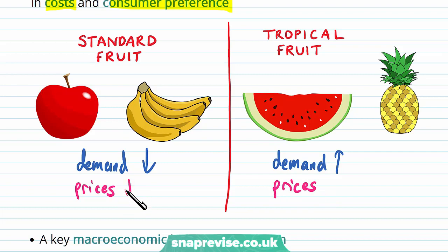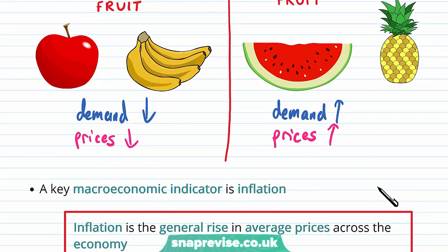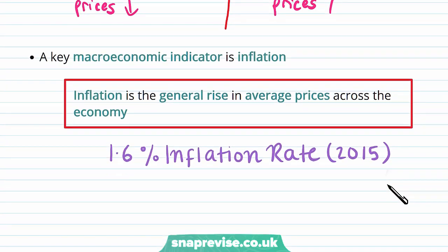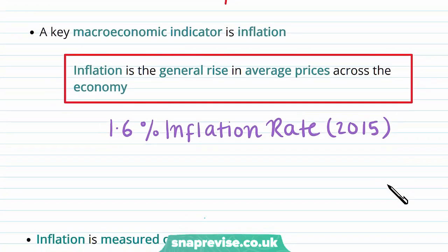The price for Standard Fruit will fall and the price of Tropical Fruit will rise. This is because we are reflecting consumer preferences in the market, and we'll see shifts in demand which reflect changes in price. A right shift in demand will cause prices to rise, and a left shift in demand will cause prices to fall.